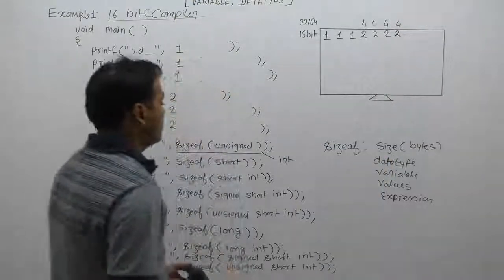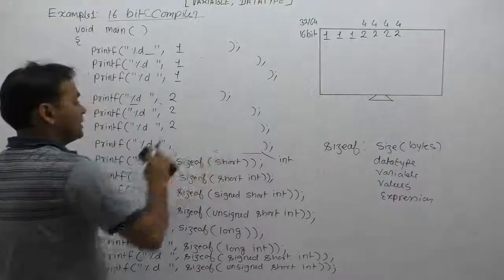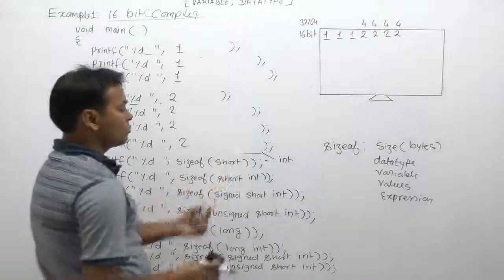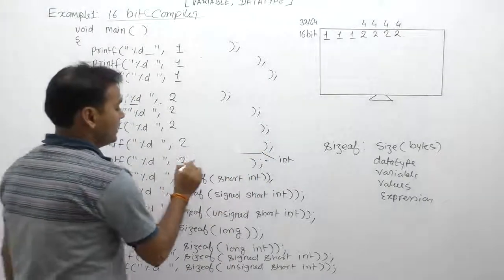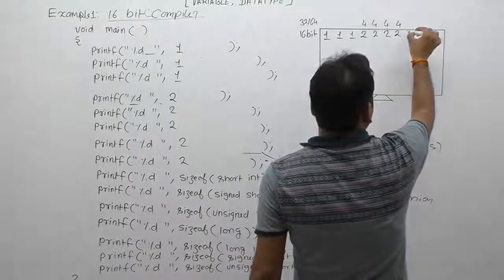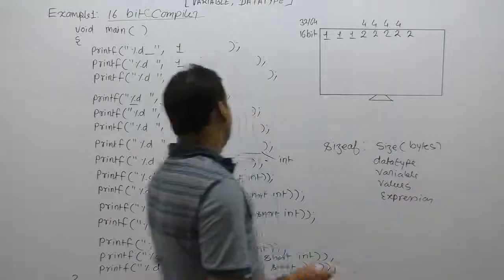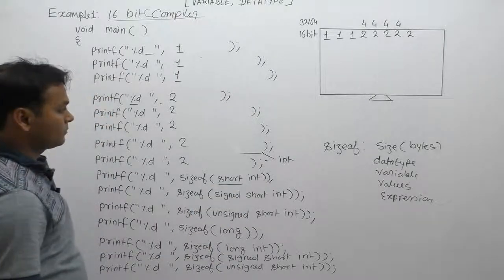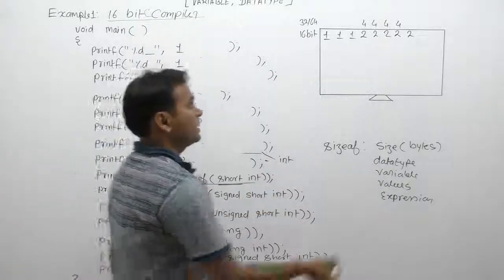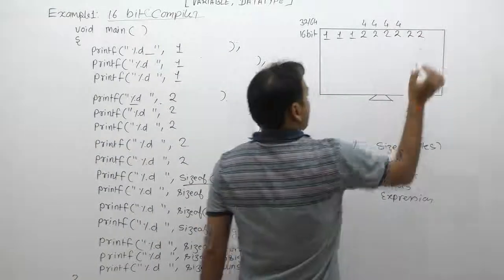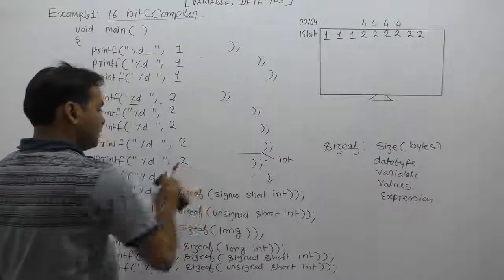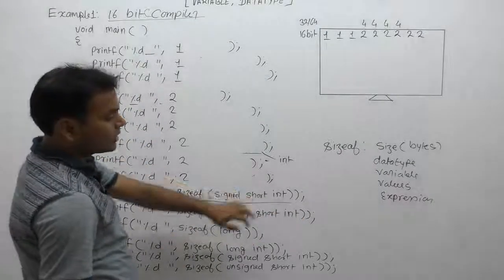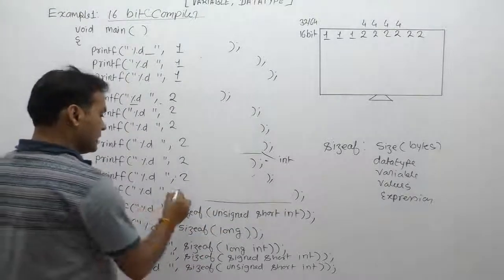Next, sizeof(short) — by default it is equivalent to short int, and the size of short int is two bytes, so it will print 2. This is two bytes in 16-bit as well as 64-bit compilers, because the short qualifier always takes two bytes. Next, sizeof(short int) — again 2 bytes. Then sizeof(signed short int) — signed does not affect the size, so short int size is 2 bytes, and again the result is 2 bytes.